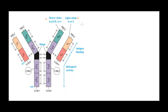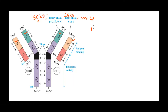They are called heavy chain or light chain because of their molecular weight. Each heavy chain has a molecular weight of 50 kilodaltons, whereas each light chain is 25 kilodaltons. So if we take the molecular weight of one single antibody molecule, it is 25 + 25 + 50 + 50 = 150 kilodaltons.